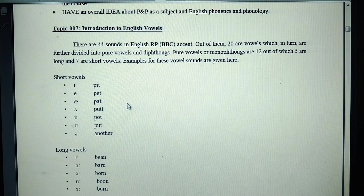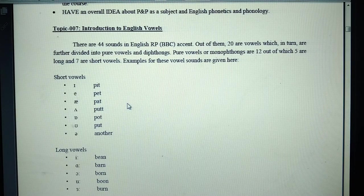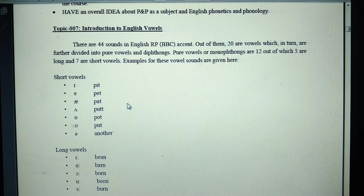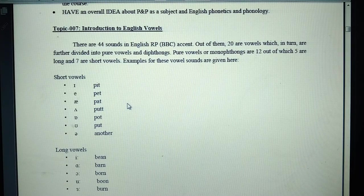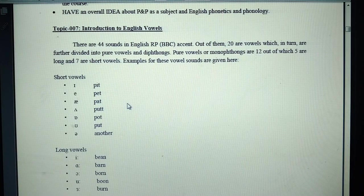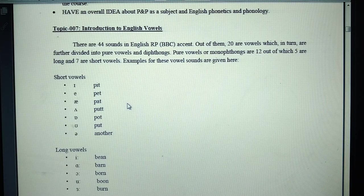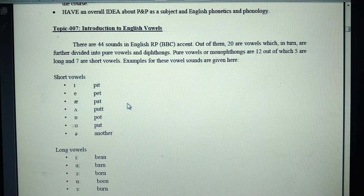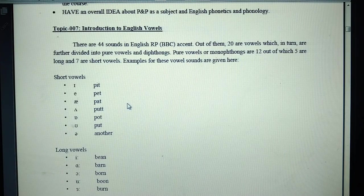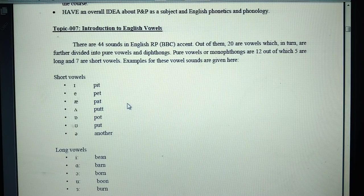There are 44 sounds in English RP accent. Out of them, 20 are vowels. The rest of them are consonants. This means vowels, consonants, diphthongs, long vowels, short vowels. Pure vowels are monophthongs, 12 out of which are 5 long and 7 short vowels.